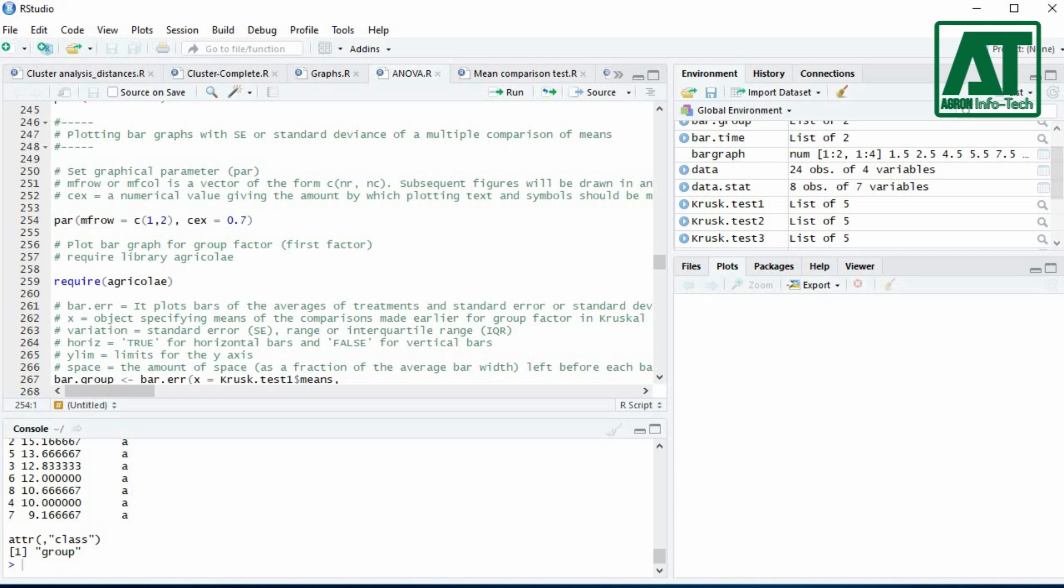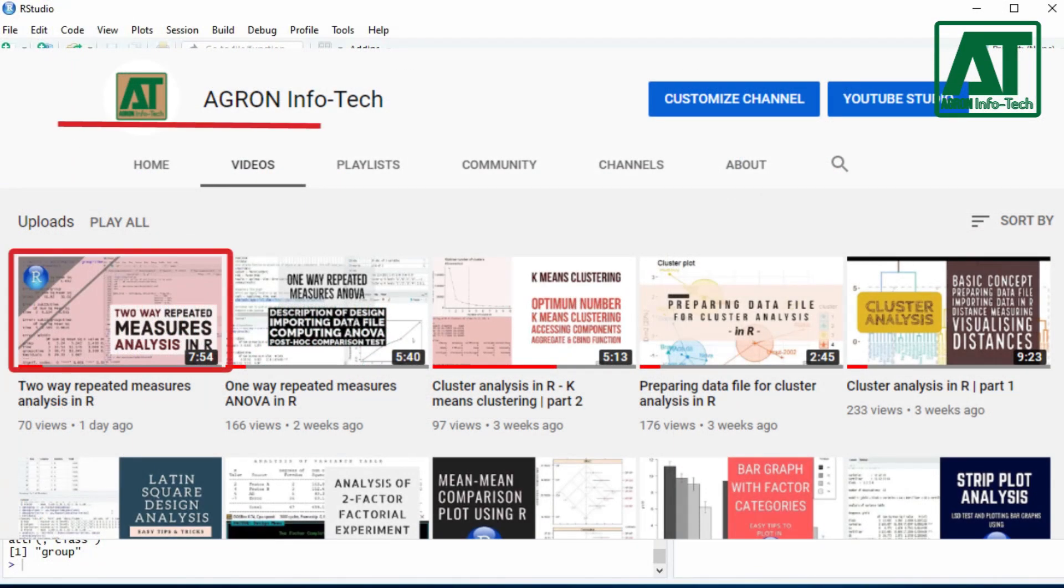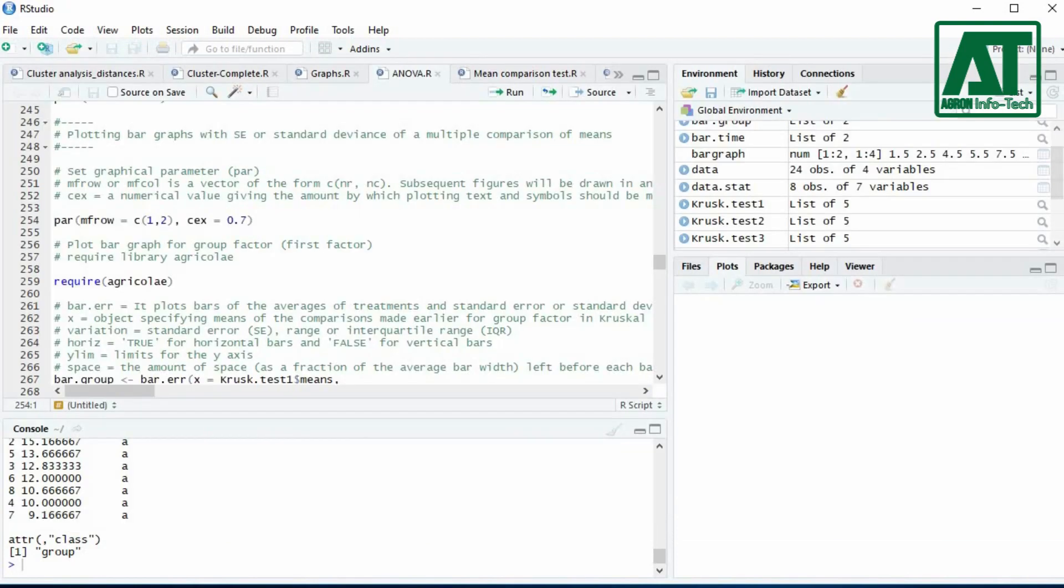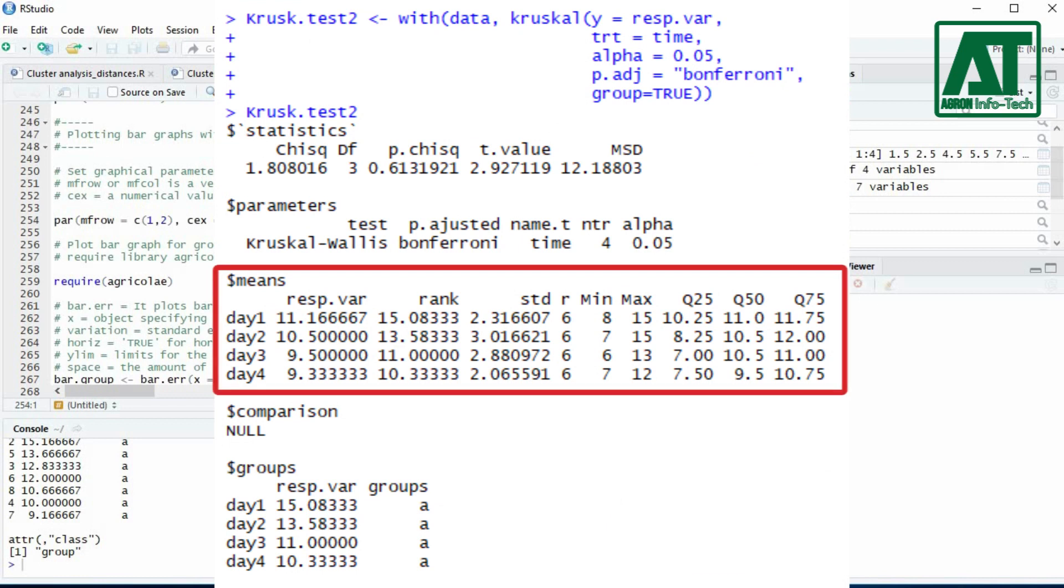Here I shall start from the previous video on two-way repeated measures analysis. In the previous video, analysis for two-way repeated measures was performed using Kruskal-Wallis test for mean comparison of treatment factors. In this video we shall use Kruskal mean comparisons component from Kruskal test to plot bar graphs.